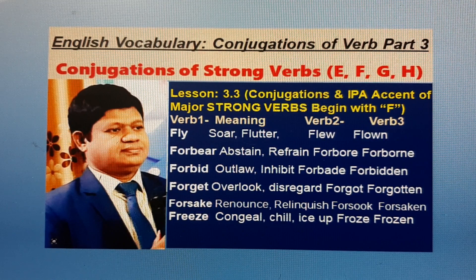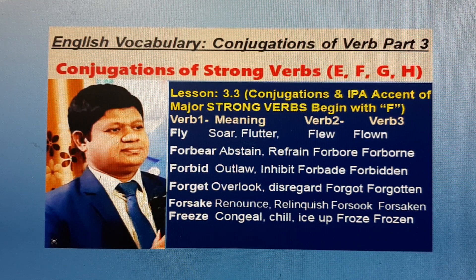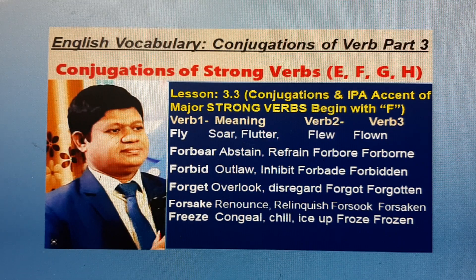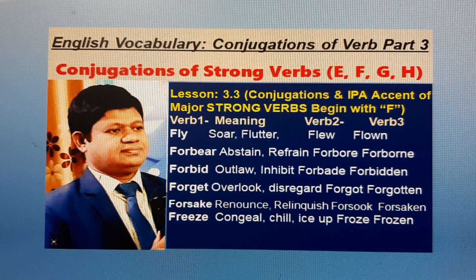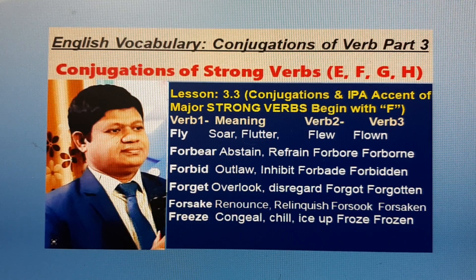Forget: base form, meaning — overlook, ignore, Bhulejawa. First form: forgot. Past participle: forgotten. Forsake: base form, meaning — renounce, relinquish, Pudhita kora. First form: forsook. Past participle: forsaken. Freeze: base form, meaning — congeal, ice up, Jamatbada. First form: froze. Past participle: frozen.